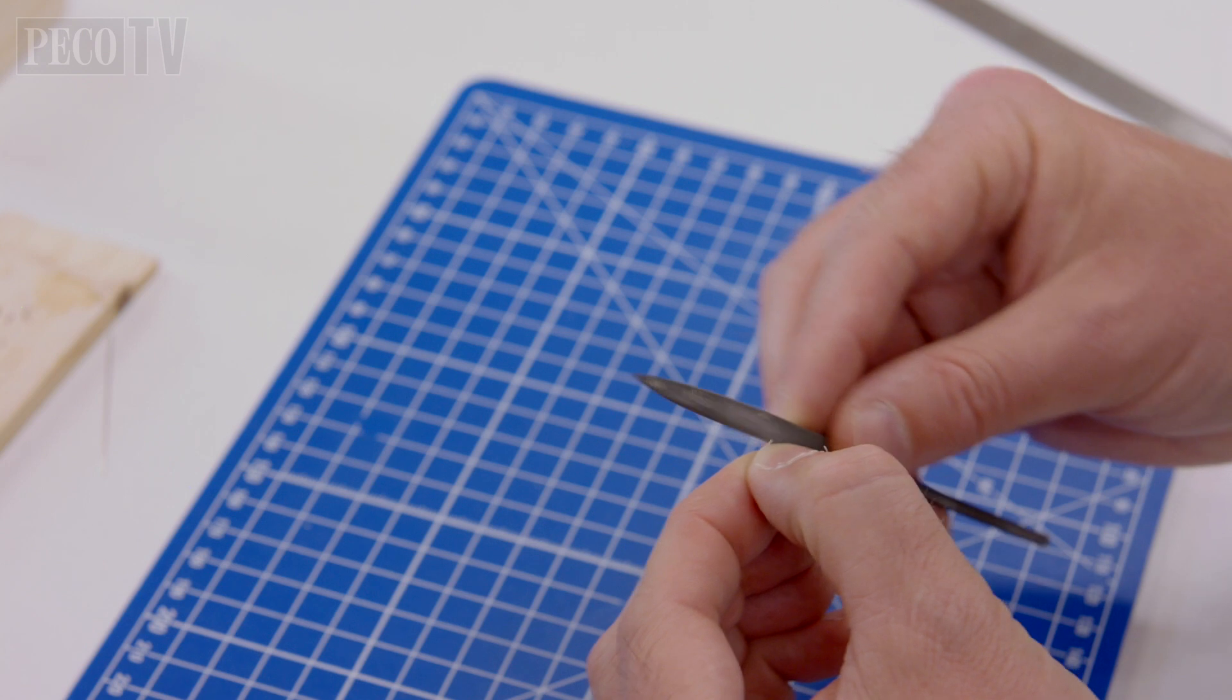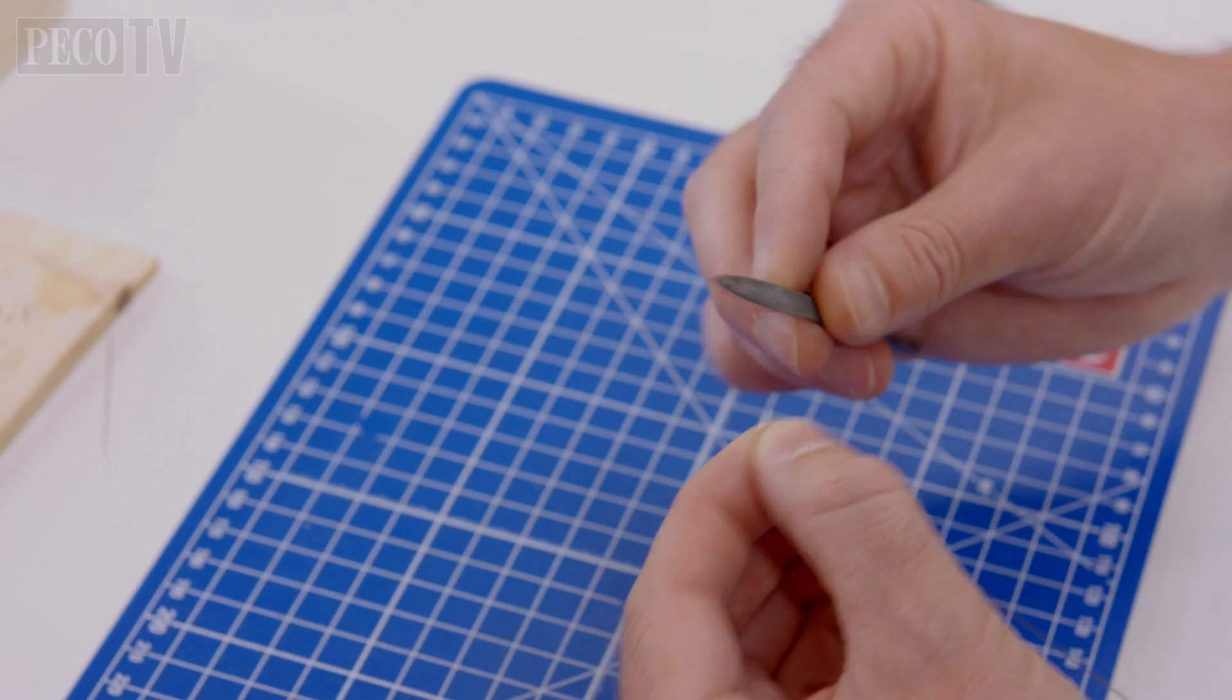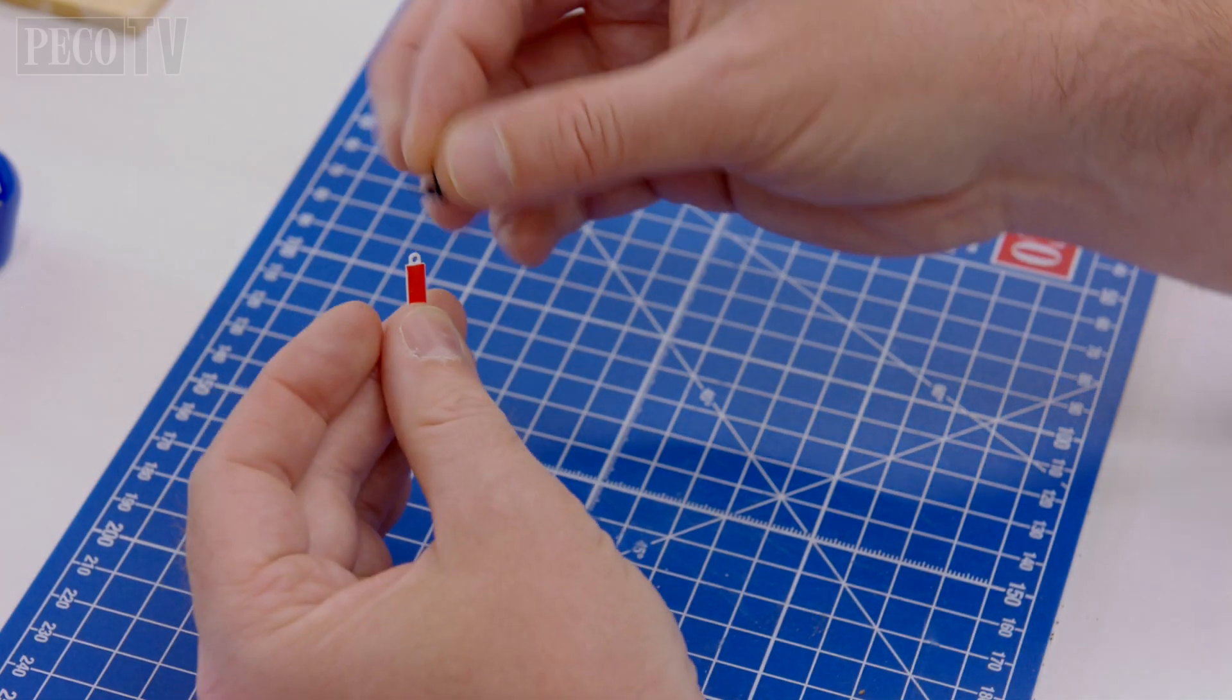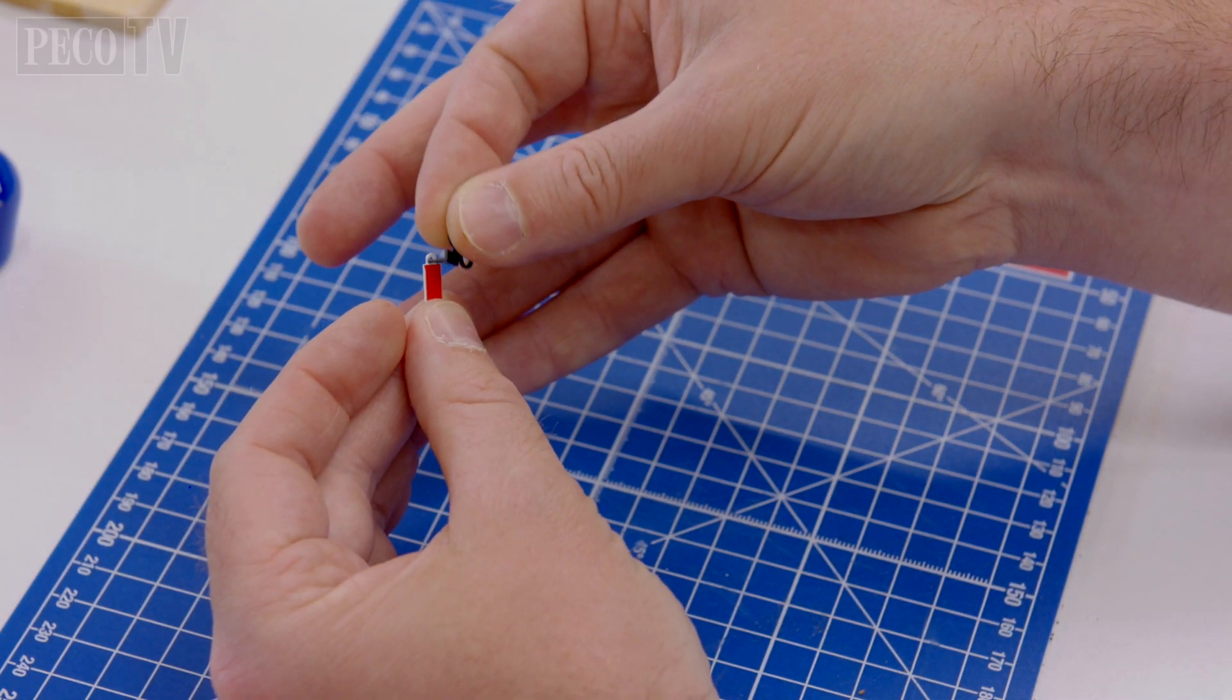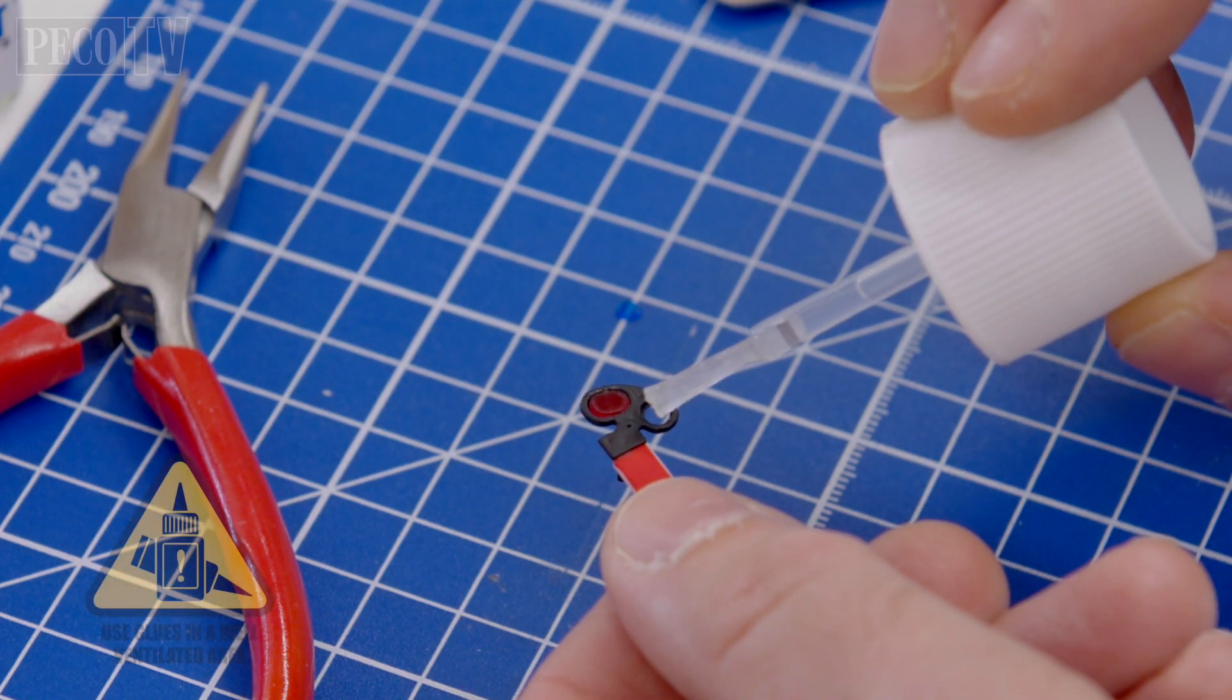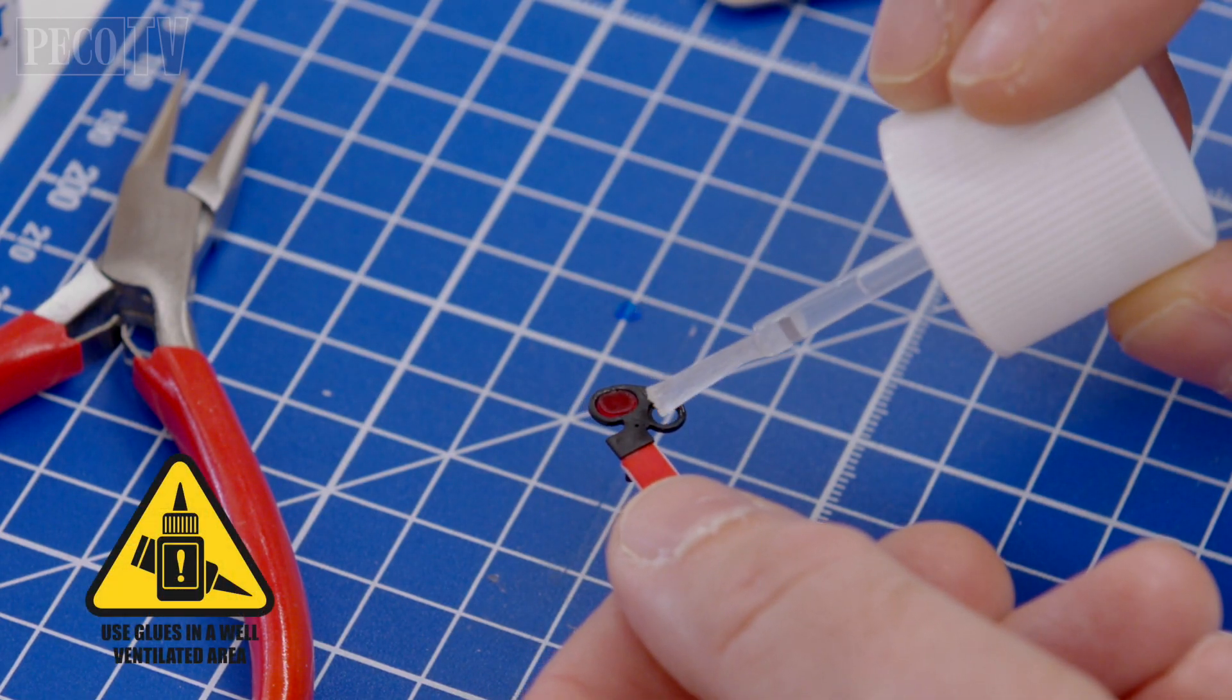The end of the wire may need slightly dressing with a needle file to pass through the holes easily in the components. Then fix the spectacle plates to the signal arm. And then fix the lenses into the spectacle plates.